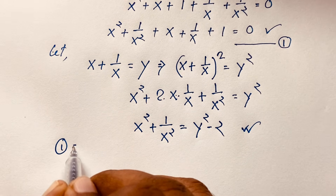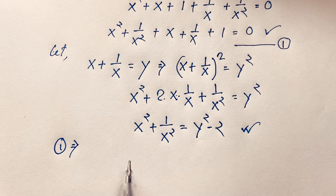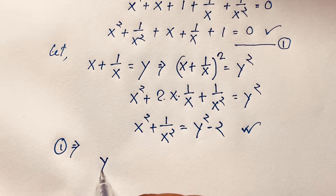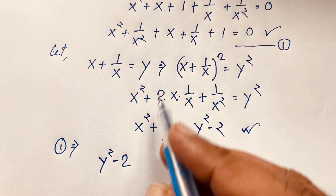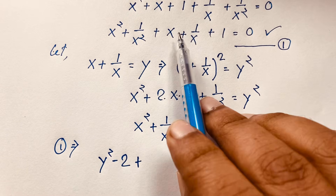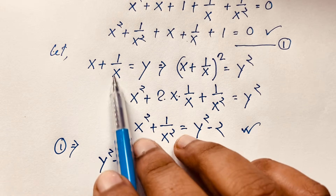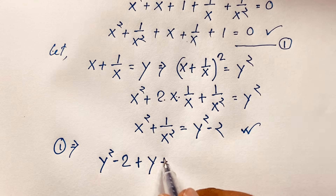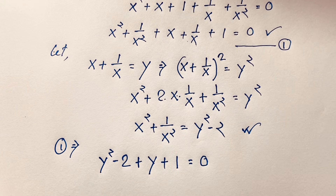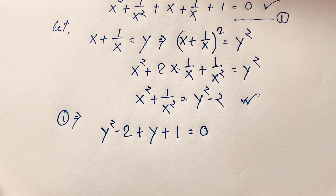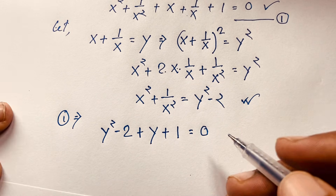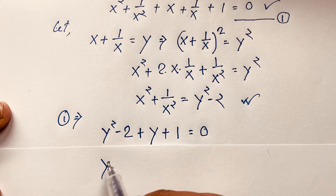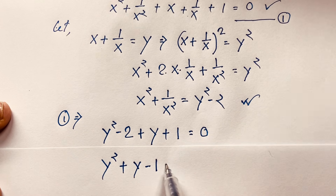Now I take our first equation: x squared plus 1 over x squared is y squared minus 2, and x plus 1 over x is y. Substituting below: y squared minus 2 plus y plus 1 equal to 0. So this gives y squared plus y minus 1 equal to 0. We find a nice quadratic equation. Remember y is equal to x plus 1 over x, so our target is to find x.